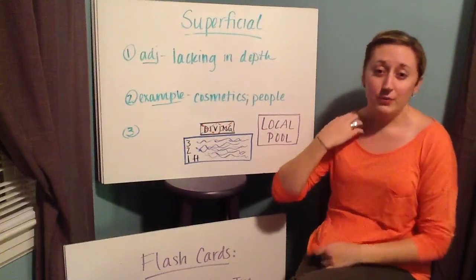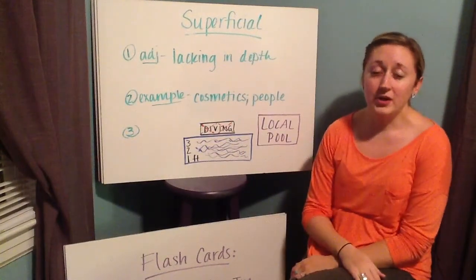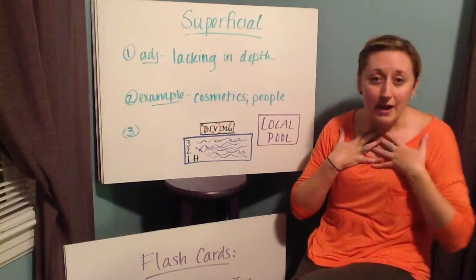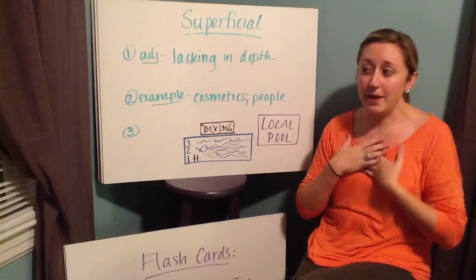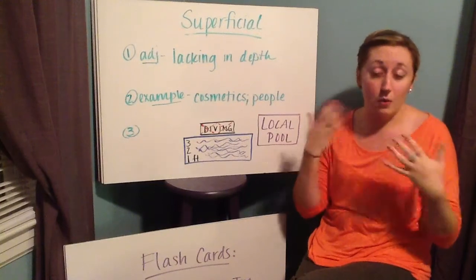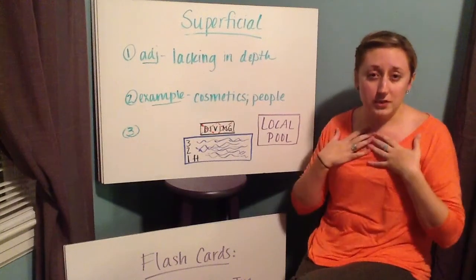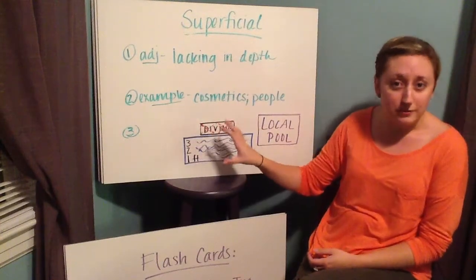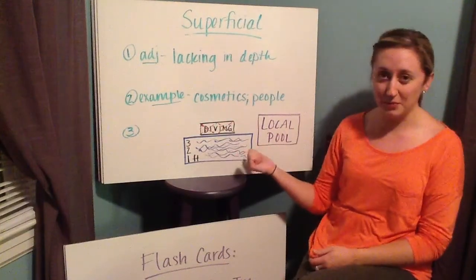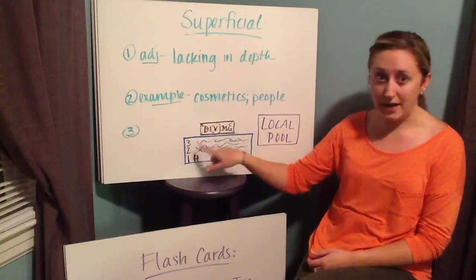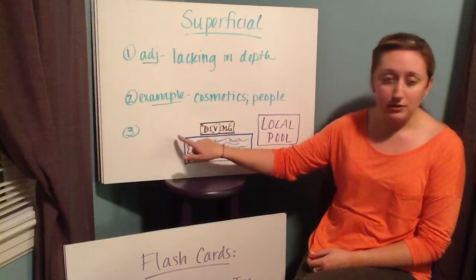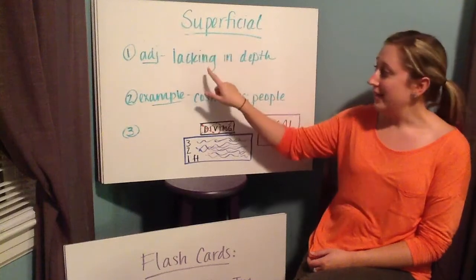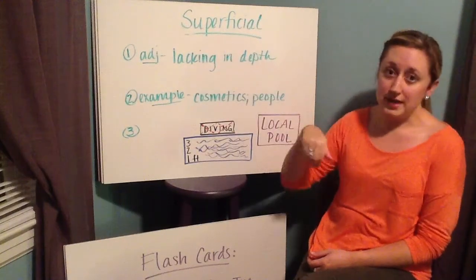Our other example is people. When we think about superficial people, sometimes we think that all they care about is what's on the outside. They don't necessarily care about working on what's on the inside or being a good person — they just want to make sure their looks are good. The picture I drew is a local swimming pool with a sign that says no diving because it's only three feet deep — the water is superficial, lacking in depth.